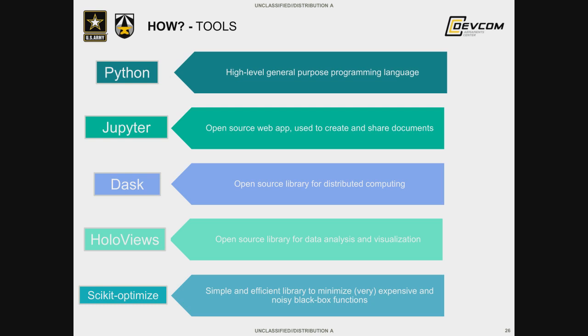The tools we use include Python, a high-level general purpose programming language. We also use Jupyter Labs and Jupyter Notebooks, which provide an easy way to create and share documents. Jupyter Labs interfaces well with Dask, a library for distributed computing that distributes workers to your code and allows parallel processing. HoloViews is how we visualize a lot of our graphics — it provides interactive graphs, and within HoloViews you can use Panels, a dashboarding app that may be a path forward. Scikit-Optimize is how we run our Gaussian process — there's a function called GP Minimize that we use for that.